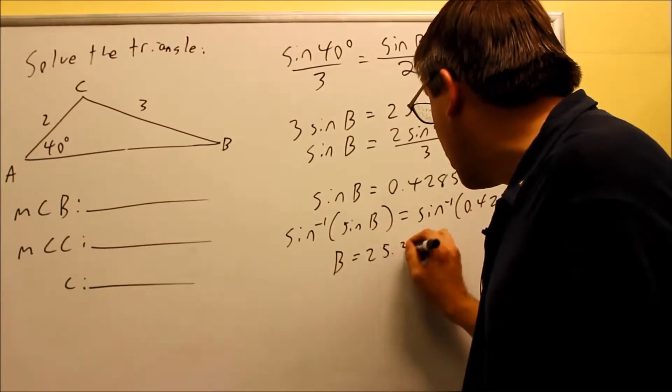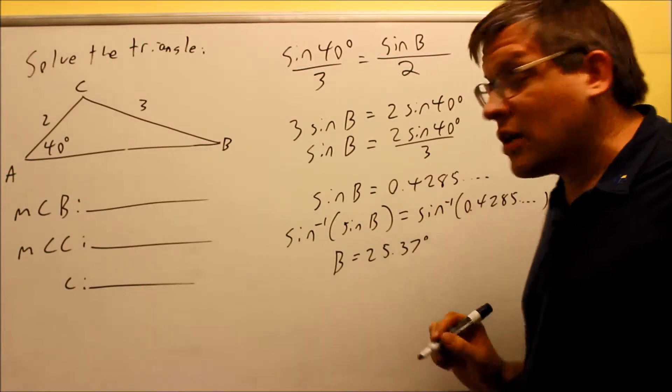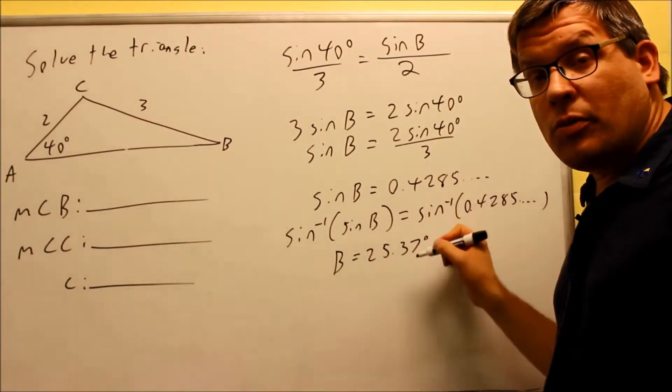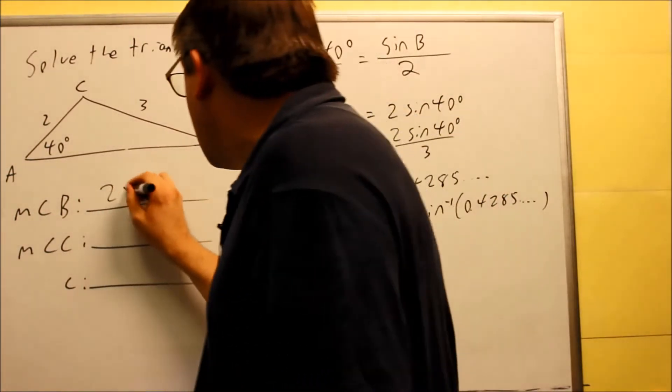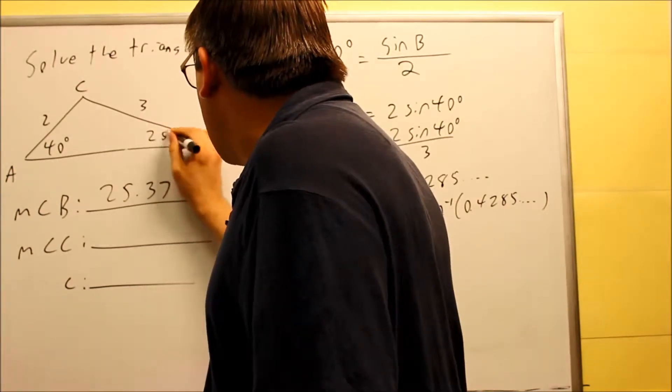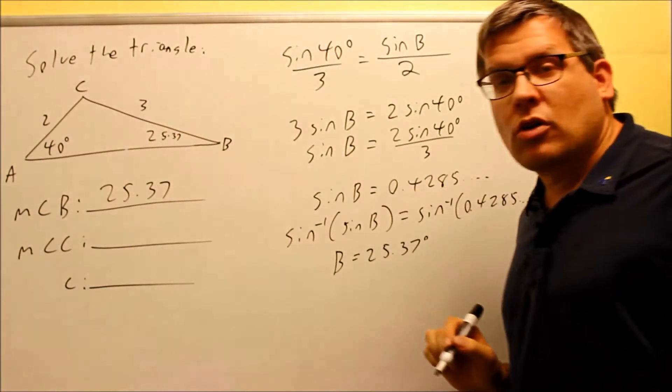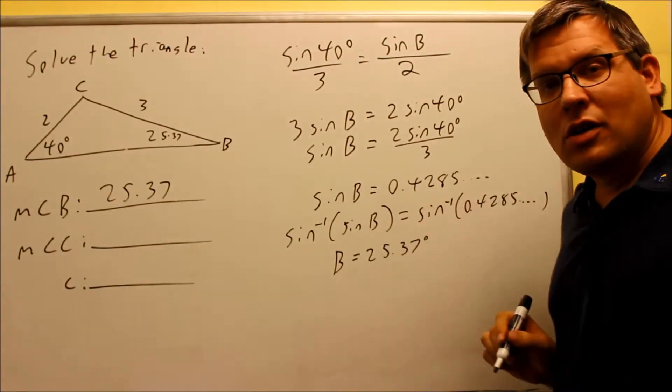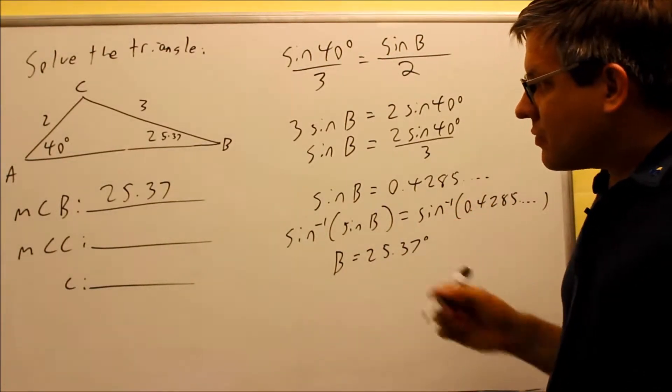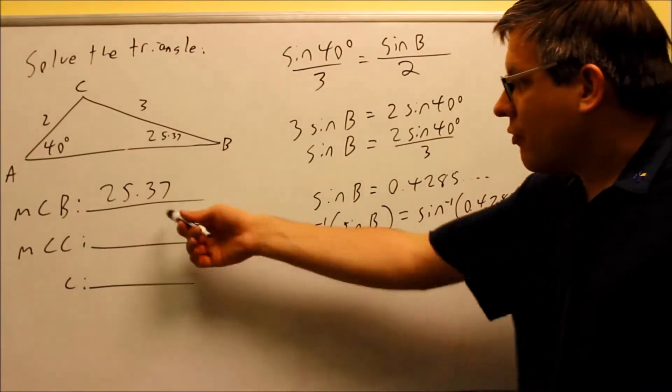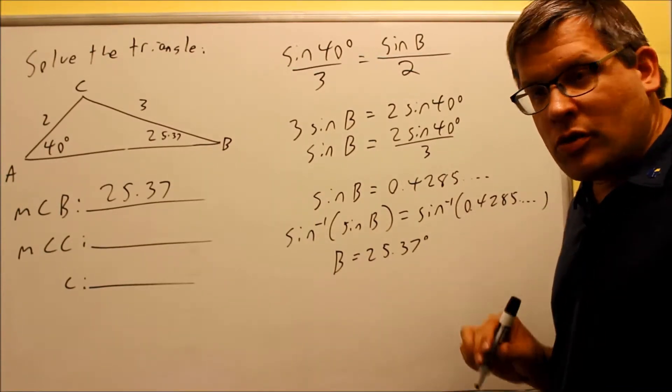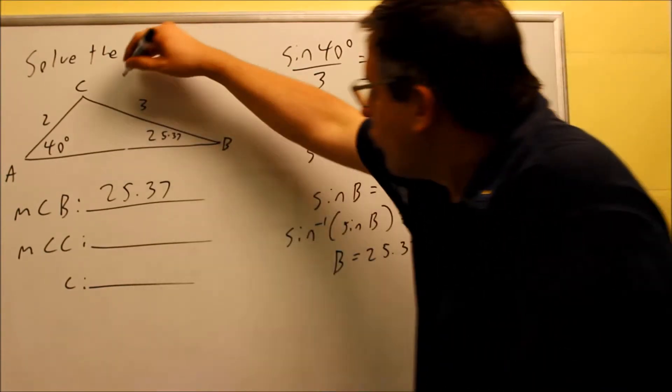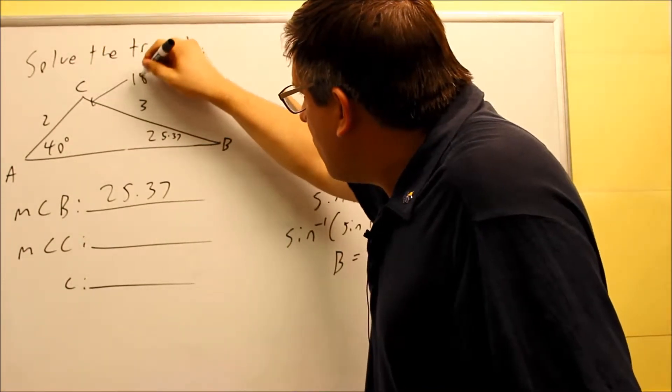you're going to get 25.37 degrees. That's going to be your angle B that answers this question and I'm going to put it on the diagram as well. 25.37 we got from the calculator. Next, what we want to do is solve for the measurement of angle C. You can do that by taking them,